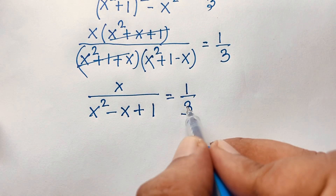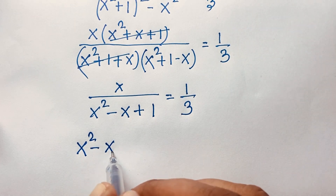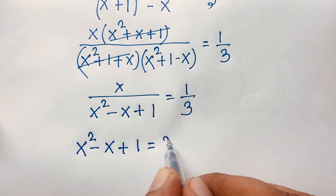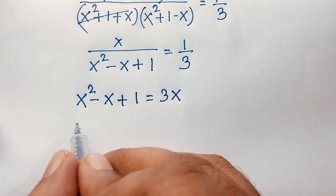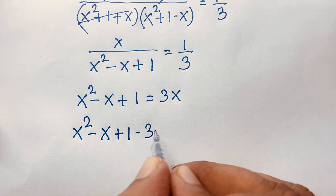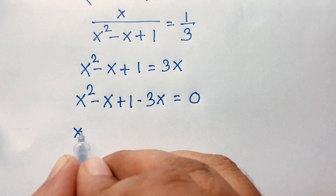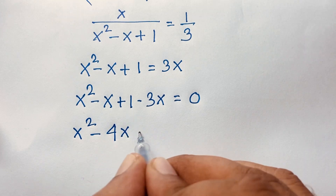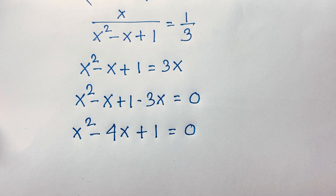Cross-multiplying gives 3x equals x squared minus x plus 1. Moving 3x to the other side: x squared minus x plus 1 minus 3x equals 0, which simplifies to x squared minus 4x plus 1 equals 0. We now have a nice quadratic equation to solve.